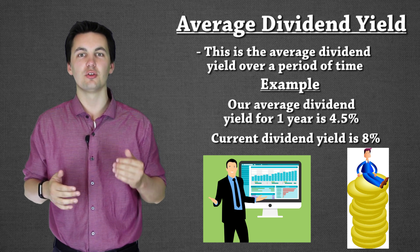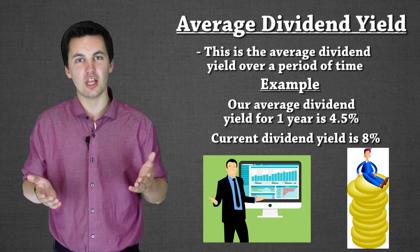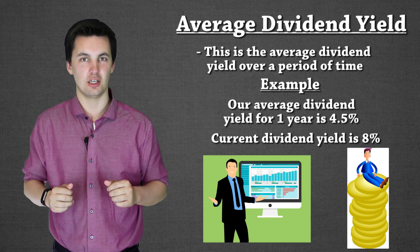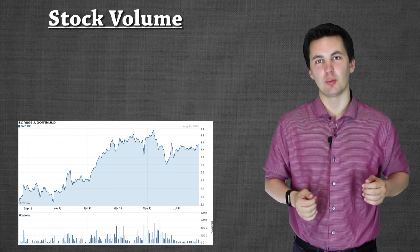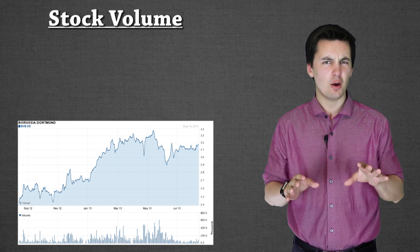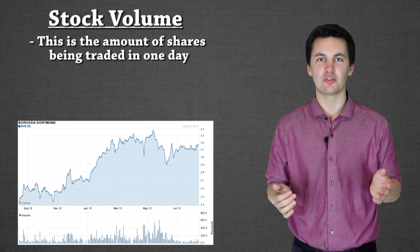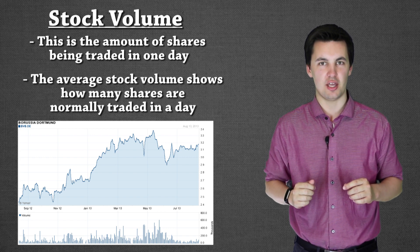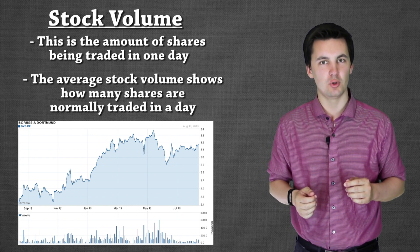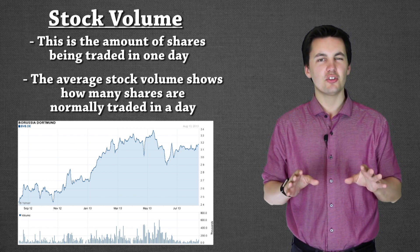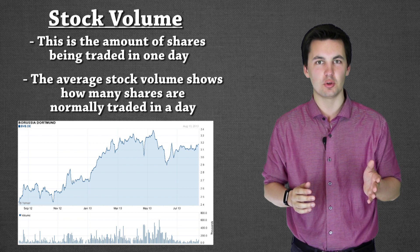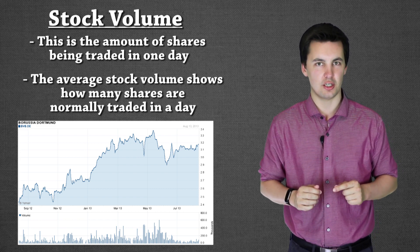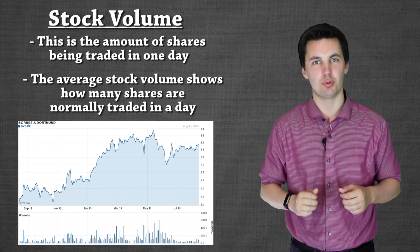The higher the dividend yield, the more money you make; the lower it is, the less you're getting back. So make sure you have a good understanding of dividend yield and average dividend yield. Another way to see if it's a good time to buy a stock is by looking at the stock volume. Volume shows how many people are trading that stock — buying and selling today. You can also see the average volume, and by comparing these you can see if a market move is more permanent or just temporary.